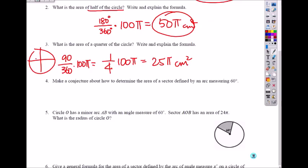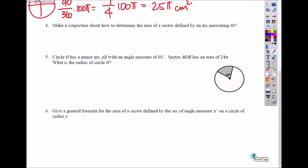So number five. Circle O has a minor arc AB, which is 60 degrees, and AOB has an area of 24 pi centimeters squared. So this is AOB. What is the radius? The area is given, which is 24 pi, and the formula for the area of that sector is the angle divided by 360 times pi r squared.